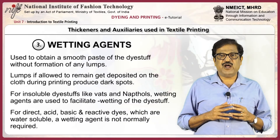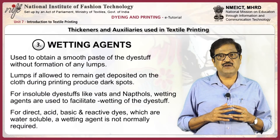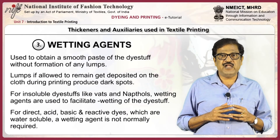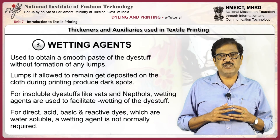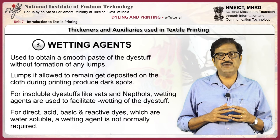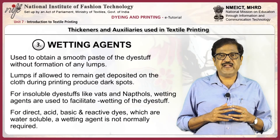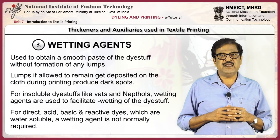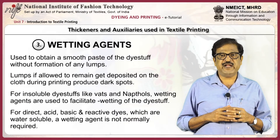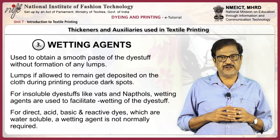Wetting agents are used to obtain a smooth paste of the dye stop without formation of any lumps. Lumps, if allowed to remain, get deposited on the cloth during printing and produce dark spots. For insoluble dye stops like vats and naphtols, wetting agents are used to facilitate wetting of the dye stop. For direct, acid, basic, and reactive dyes which are water soluble, a wetting agent is normally not required.